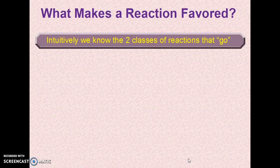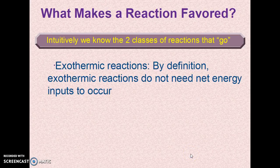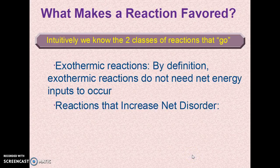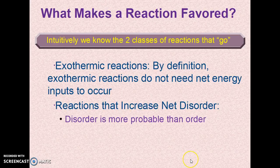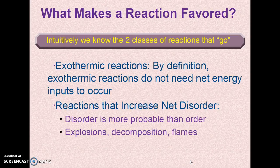What makes a reaction favored? Intuitively, we know there are two classes of chemical reactions that typically go to completion. The first would be highly exothermic reactions, because by definition they don't need net energy inputs to occur. The other is reactions that increase the net disorder of the system, because disorder is more probable than order. That includes explosions, decomposition, and flames — increasing the disorder of a system, and many of them are also exothermic.